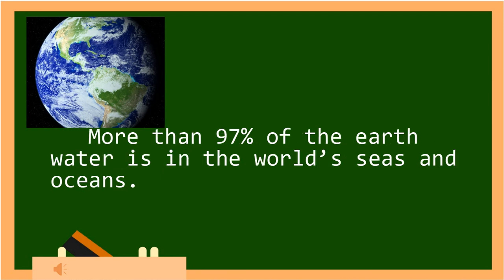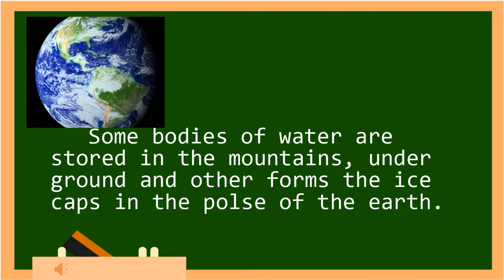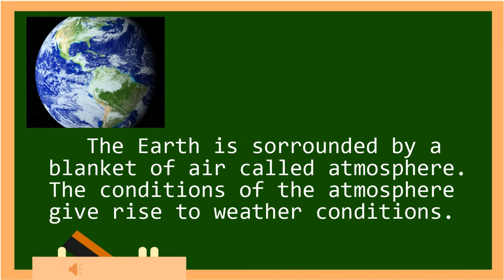More than 97% of the Earth's water is in the world's seas and oceans. Some bodies of water are stored in the mountains, underground, and in other forms such as the ice caps in the poles of the Earth. The Earth is surrounded by a blanket of air called the atmosphere. The conditions of the atmosphere give rise to weather conditions.